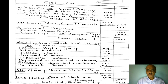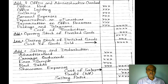Then add opening stock of work-in-progress and deduct closing stock of work-in-progress to arrive at the total cost. Then we get works cost, also called factory cost.